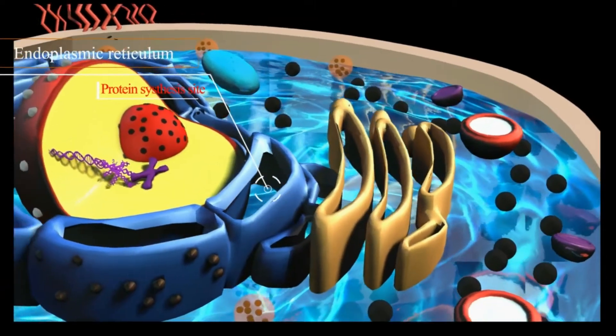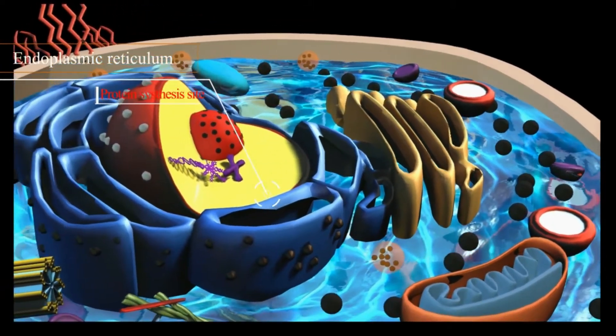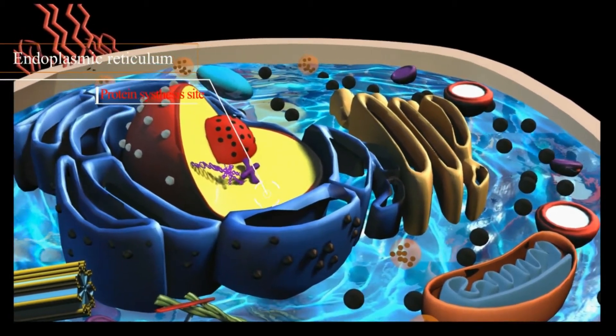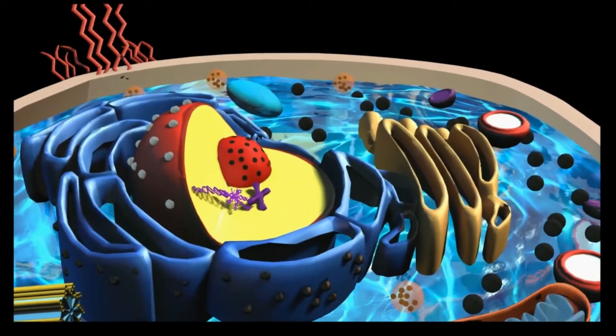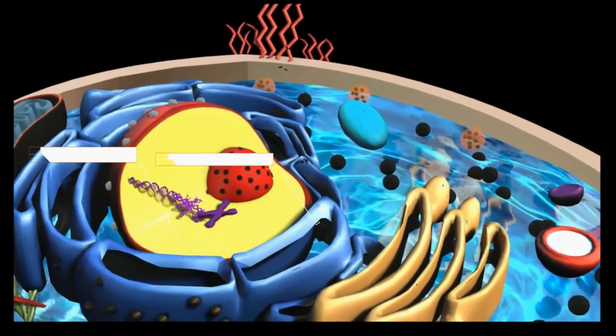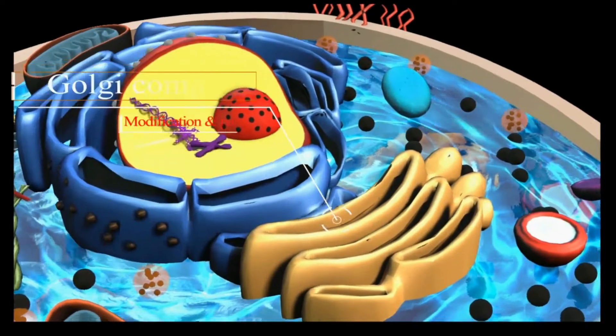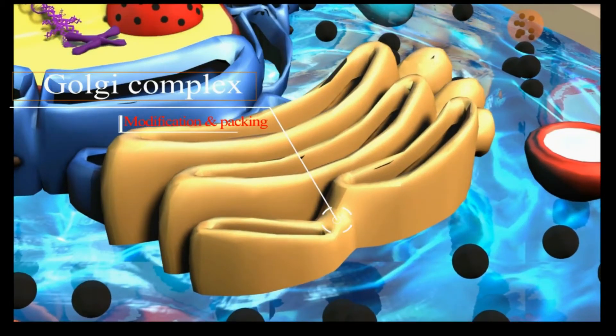Ribosomes, which create proteins, line a portion of the endoplasmic reticulum. This portion is called rough endoplasmic reticulum, while the portion without ribosomes is called smooth endoplasmic reticulum. The Golgi apparatus or Golgi complex is found in most cells. It is another packaging organelle like the endoplasmic reticulum.